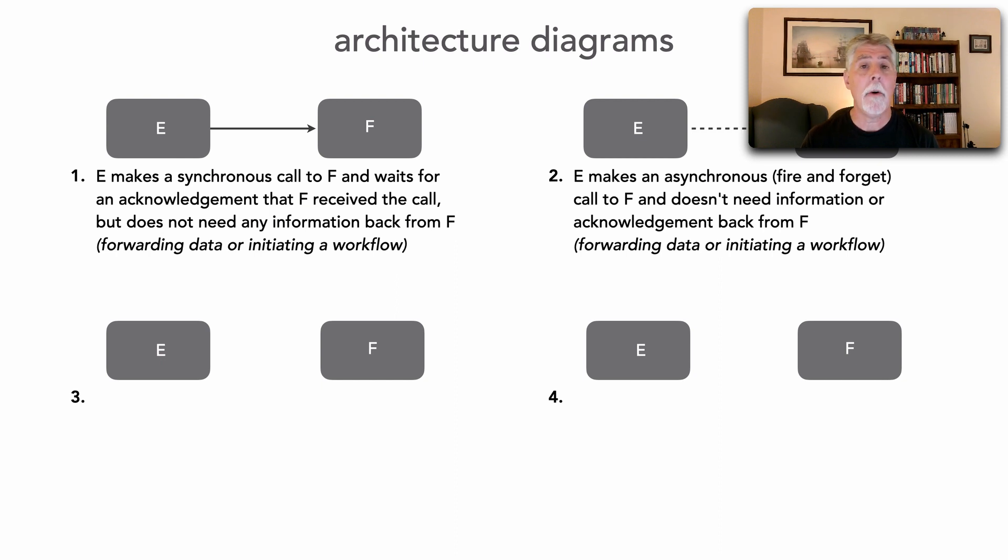And so in this case, I'm going to show a single dotted line with an arrow, not bi-directional, just saying I'm making an asynchronous call to F.